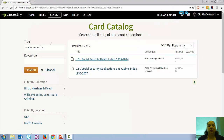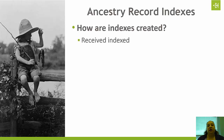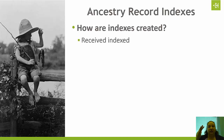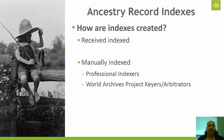The Social Security Death Index is just one example — there are certain sets of records where Ancestry receives them already indexed. One of the quickest ways to tell is whether there's an image attached. In the case of the Social Security Administration indexed records, there's no image attached — it's just an index. If it's just an index, chances are Ancestry received it that way from whoever the original record holder might be.